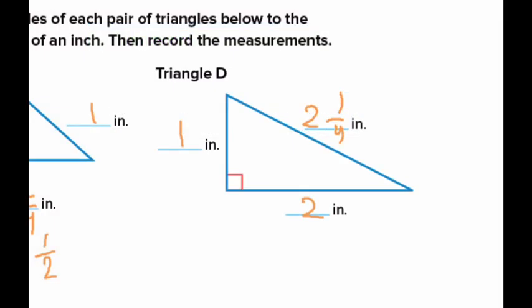Before we move to the next page, let's take a look at triangle D. Do you see the squared corner? Remember the right angle? We talked about angles and the right angle — the square corner. This triangle has a square corner, it has a right angle. So what do we call it? We call it a right triangle. Any triangle that has one right angle, we call it a right triangle.